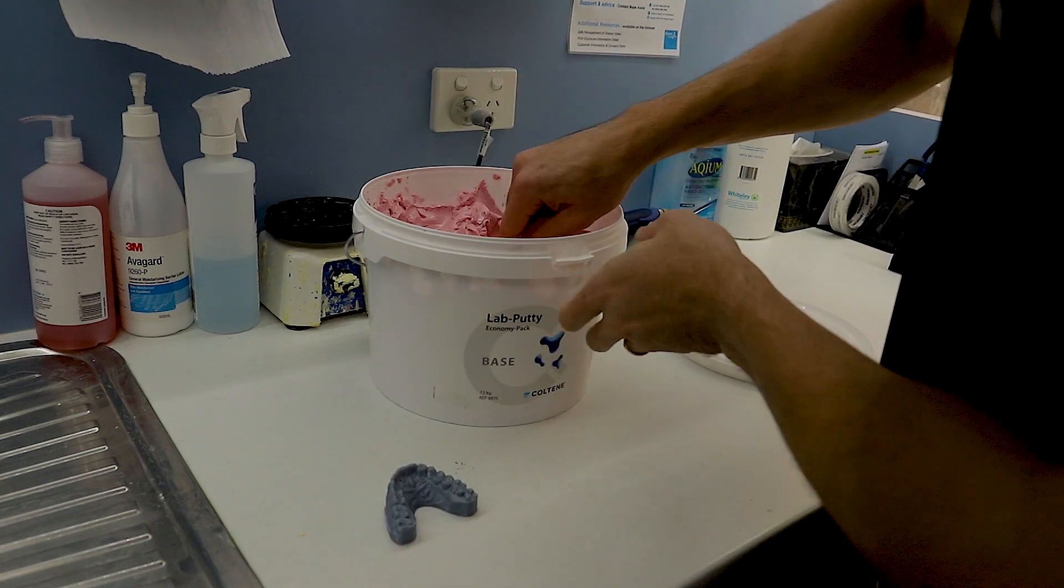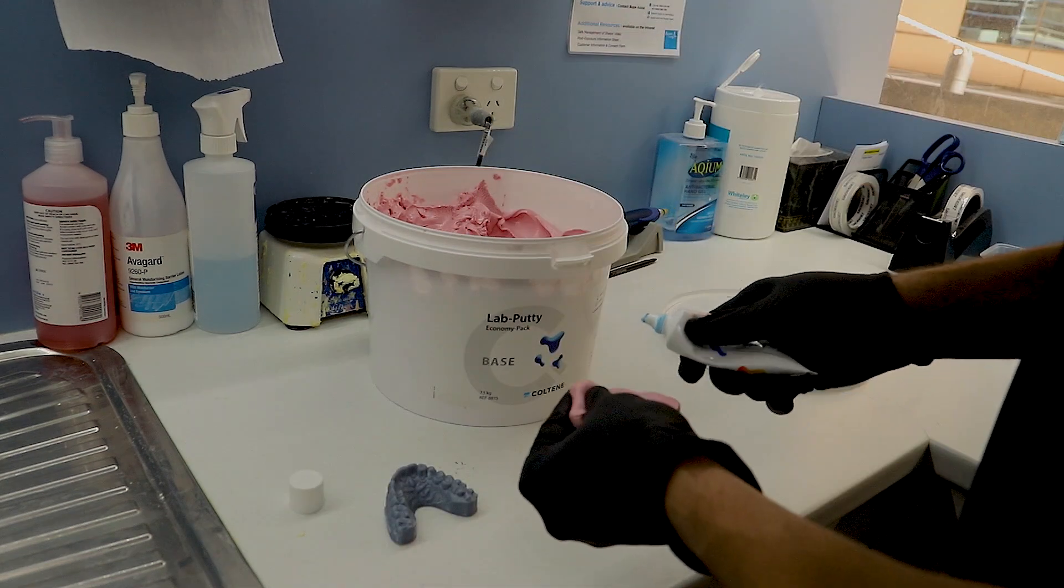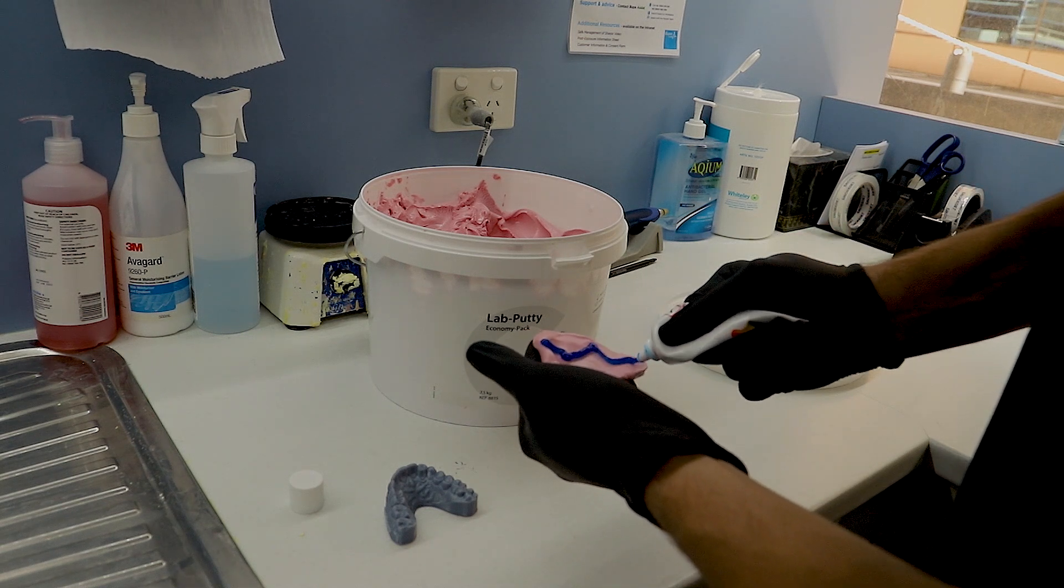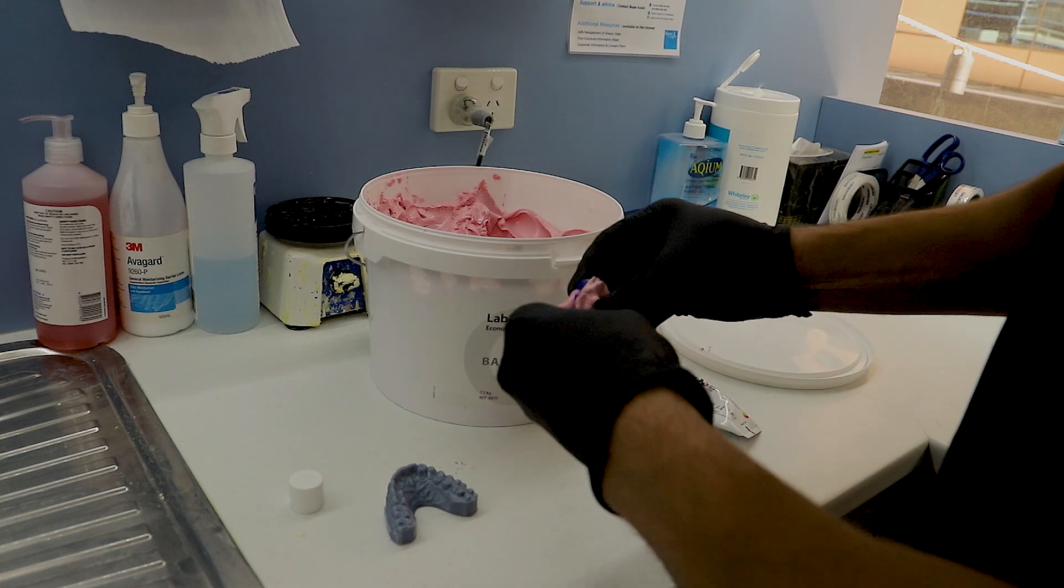So what we want to do is get the putty. Most are going to come as a catalyst and a base or an A and B mix. Now make sure that you've got enough of the catalyst and you're going to mix them together.